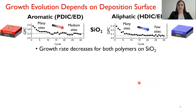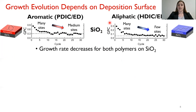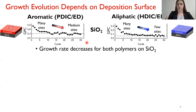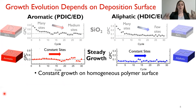We also want to consider how the growth surface affects the growth rate itself. The active site density on the film you are depositing on is going to determine the growth rate. On SiO2, looking at growth per cycle versus cycle for both the aromatic and aliphatic polymers, both undergo a decrease in growth rate, again attributed to double reactions, which are expected to be more significant for the aliphatic film. When we look at deposition on a homogeneous polymer surface — each film growing on itself, aromatic on aromatic or aliphatic on aliphatic — we see a constant growth rate because our active site density is not changing. This is expected.